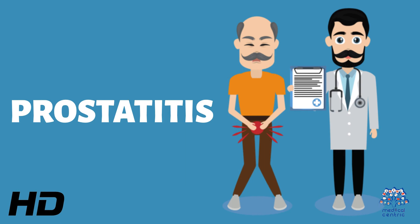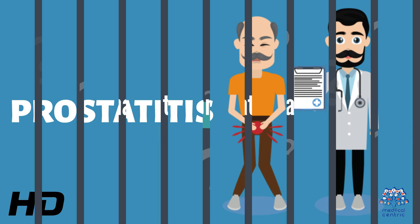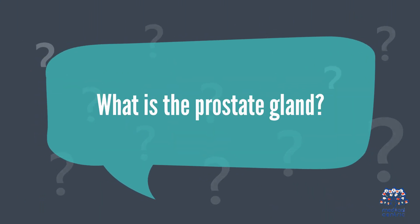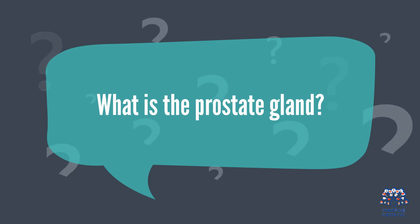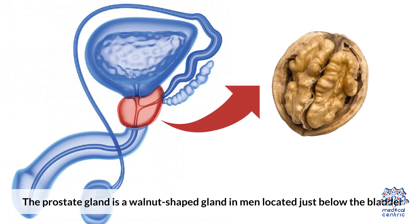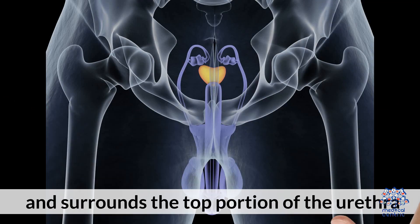Today's video topic is Prostatitis. The prostate gland is a walnut-shaped gland in men located just below the bladder and surrounds the top portion of the urethra.